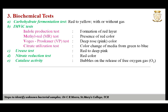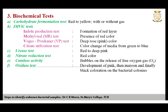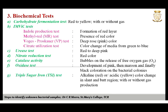The catalase test is used to determine the ability of microorganisms to degrade hydrogen peroxide by producing the enzyme catalase. The oxidase test distinguishes bacteria on the basis of cytochrome oxidase activity; oxidase enzymes play a vital role in the electron transport system during aerobic respiration, aiding differentiation among Neisseria and Pseudomonas, which are oxidase-positive, and Enterobacteriaceae, which are oxidase-negative. The triple sugar iron (TSI) test helps differentiate among members of Enterobacteriaceae and between Enterobacteriaceae and other groups of intestinal bacilli.